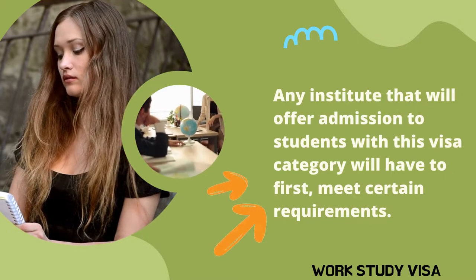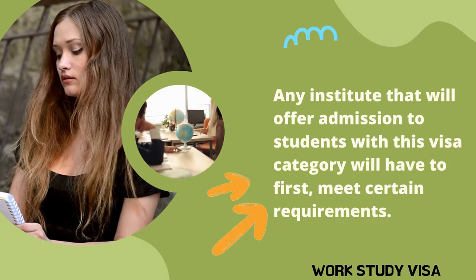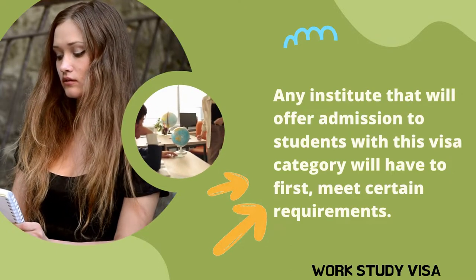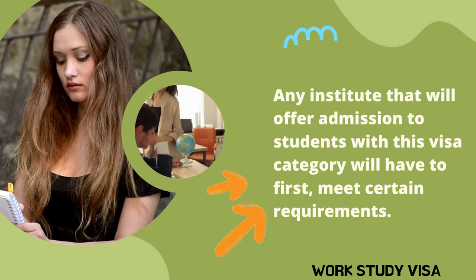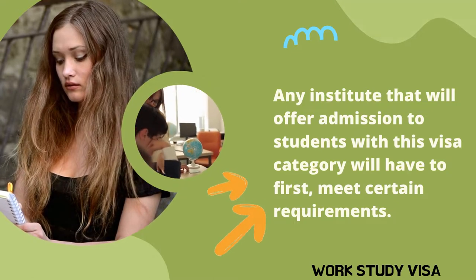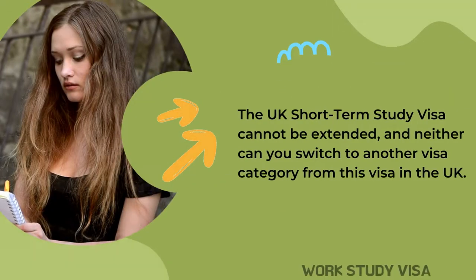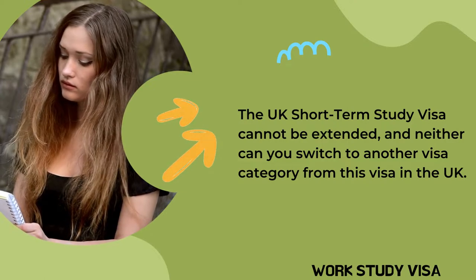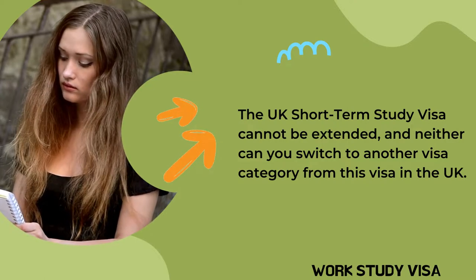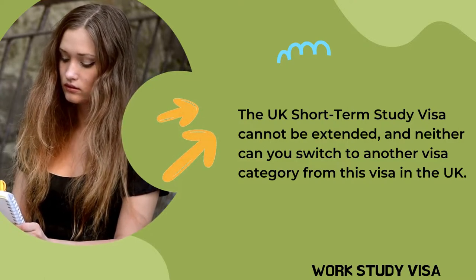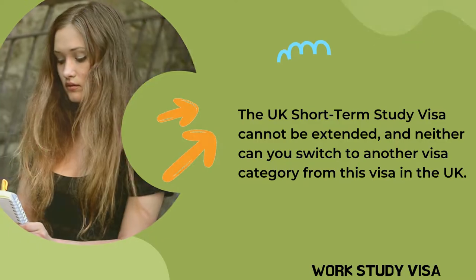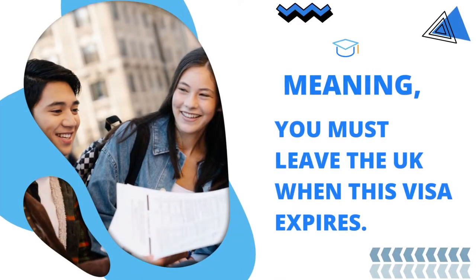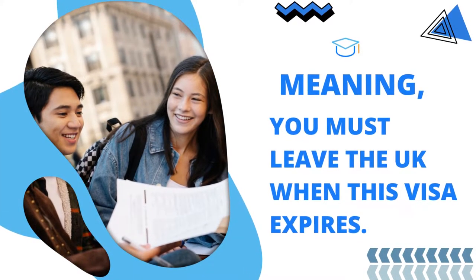Any institute that will offer admission to students with this visa category will have to first meet certain requirements. Please note, the UK short-term study visa cannot be extended and neither can you switch to another visa category from this visa in the UK. Meaning, you must leave the UK when your visa expires.